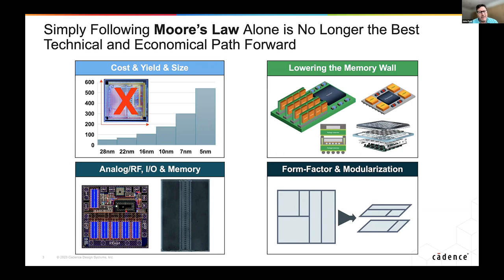Designing something at 5 nanometers or 3 nanometers can cost well over half a billion dollars once you're all in. So if you're designing a product that isn't super high volume — something in aerospace and defense, for example, where you're not building hundreds of thousands or millions of devices — it's impossible to recoup the NRE for those lower-volume product types. That's why we see a lot of companies in that space leading the push toward heterogeneous integration.